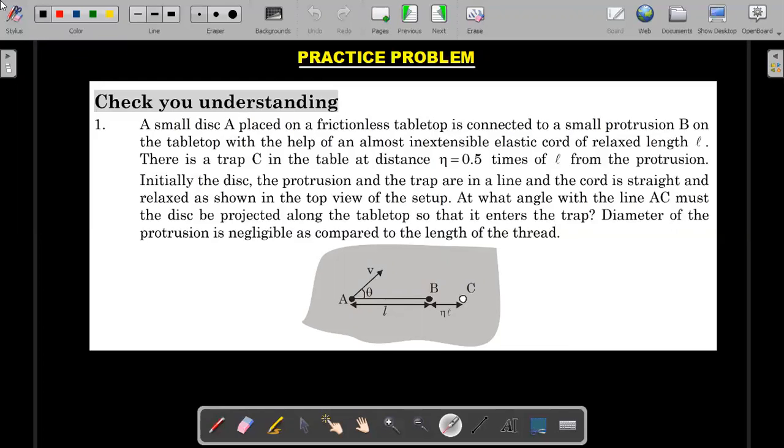You need to identify some important wordings in this particular question, that is almost inextensible but elastic cord. This is slightly different from your elastic cord in general. Whenever elastic cord is mentioned we talk about its spring constant K. So in this particular problem the value of K actually tends to infinity, but e value tends to one. This is the slightly different thing from usual stuff that we do in our JEE advanced syllabus.